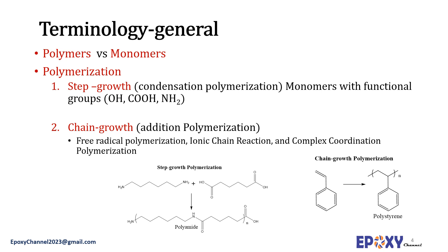Polymers are long molecules consisting of smaller building blocks with a set of properties that do not change remarkably by the addition of one or a few number of building blocks. Monomers are these building blocks or repeating units. A polymer is a chemical structure with a long chain consisting of smaller building blocks called monomers. Polymerization is a chemical reaction that joins these monomers together to form a polymer.